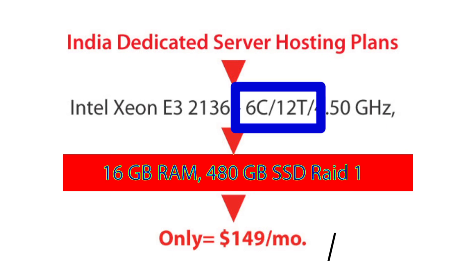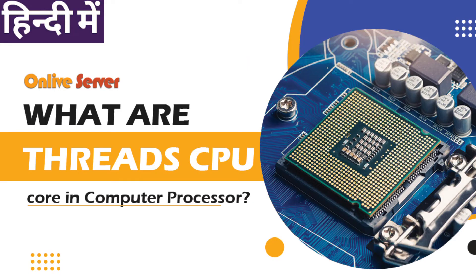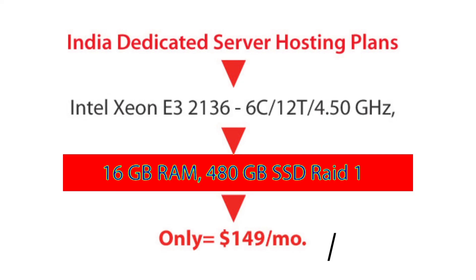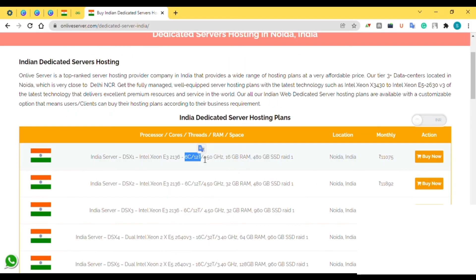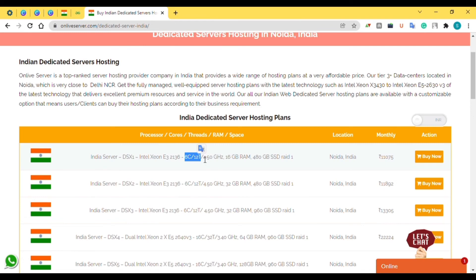You can see that Plan X1 has six cores and 12 threads. Now, if you want to know what threads are, I have already created a video about that — the link is given in the description, go there and watch that video if you don't know about threads. So these are the plans provided by our company.